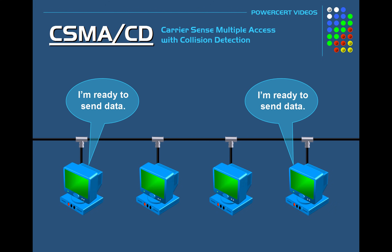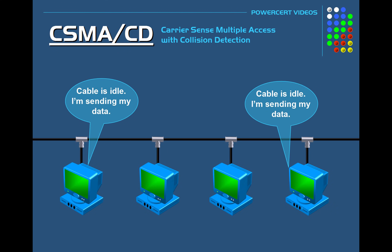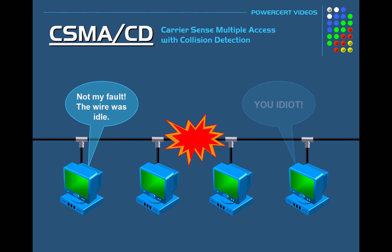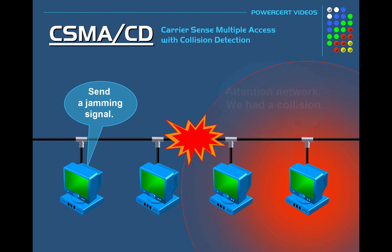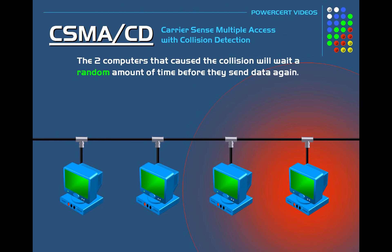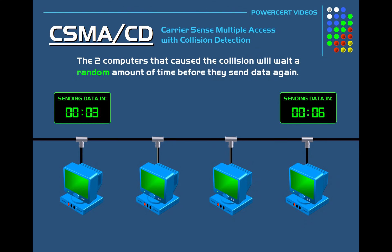In another scenario, if two computers are ready to send their data and they both notice that the cable is idle, both computers will go ahead and transmit their data at the same time. When this happens, a collision occurs. When the computers detect a collision, they immediately stop sending and instead transmit a jamming signal out on the network. This jamming signal notifies all other computers on the network that a collision has happened. After receiving the jamming signal, the two computers that caused the collision will wait a random amount of time before they send their data again — the wait time must be random so that the collision doesn't happen again.